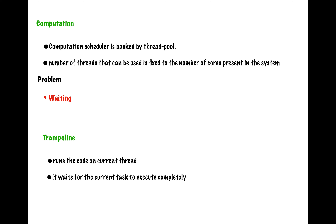Going back to recap: AndroidSchedulers.mainThread is something Android developers use most because we have to update the UI at the end of the job, and to update UI we always need the main thread or UI thread — that is the use of AndroidSchedulers. Apart from all this, IO, computation, and trampoline are the main schedulers you should be using, and mostly as an Android developer you will be using IO. Always keep in mind what to use at which point and which one not to use.